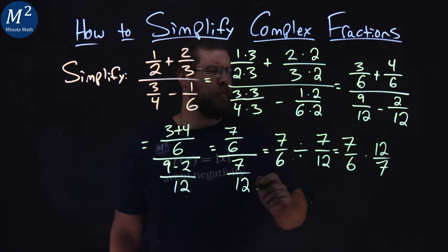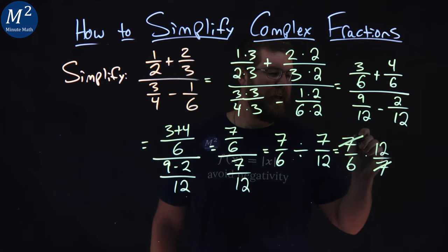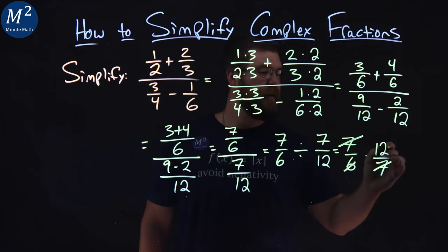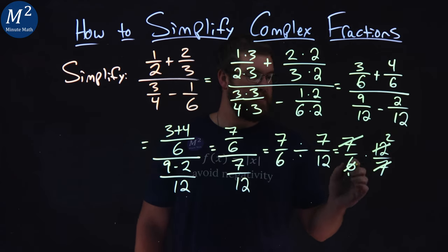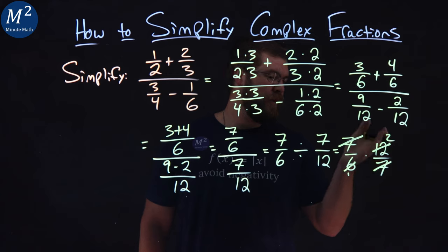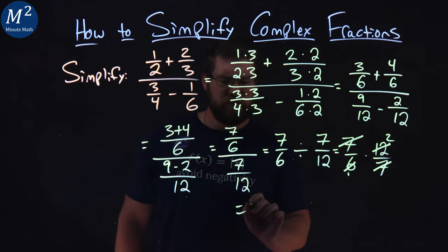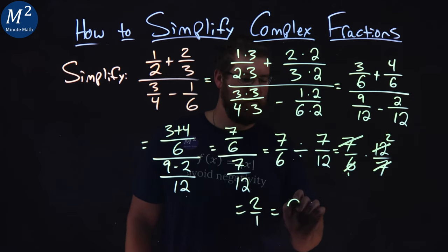Now this becomes pretty easy. 7s can cancel right here. 6 goes into 12 two times, so we're left with just 2, and then we have a 1 in the denominator, and so 2 over 1 equals 2.